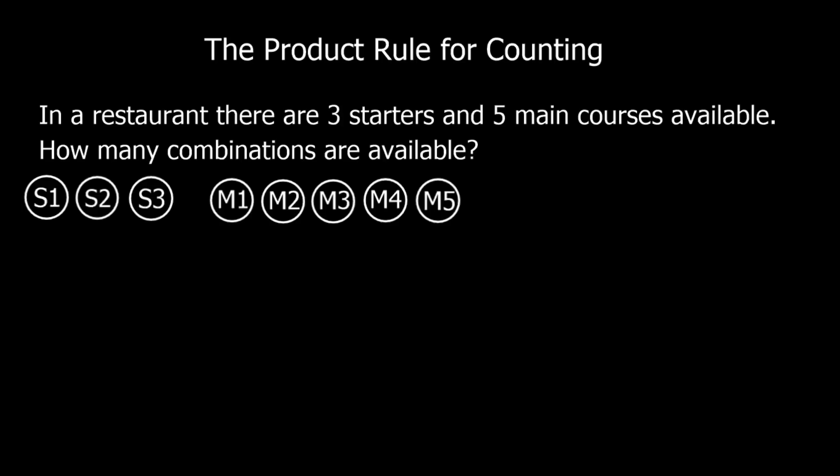Now we're going to look at the product rule for counting. In a restaurant there are three starters and five main courses available. How many combinations are there available?